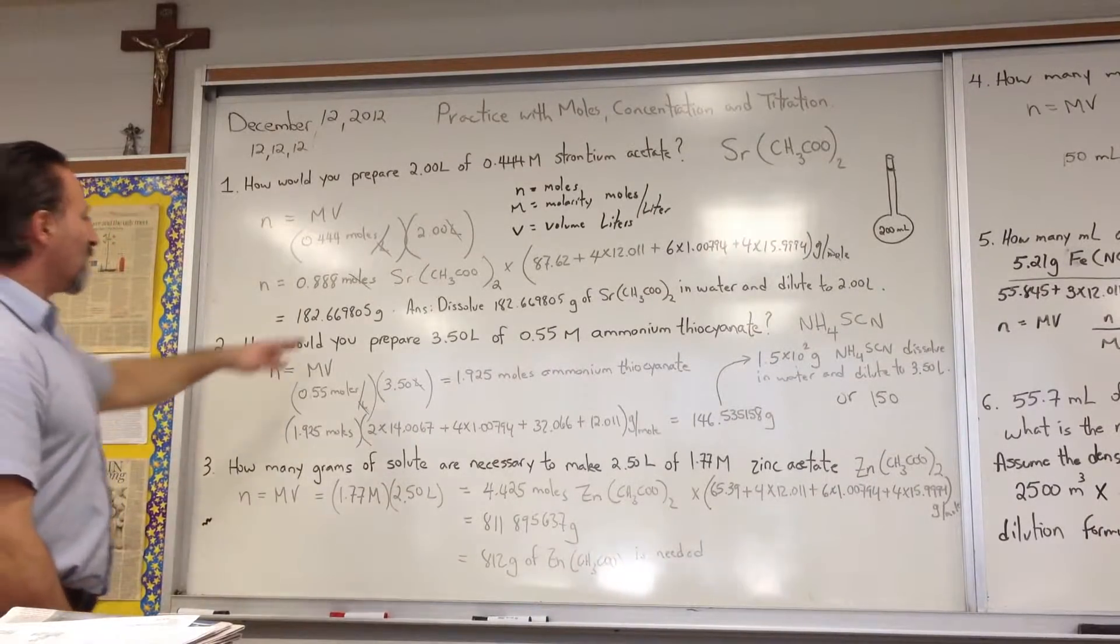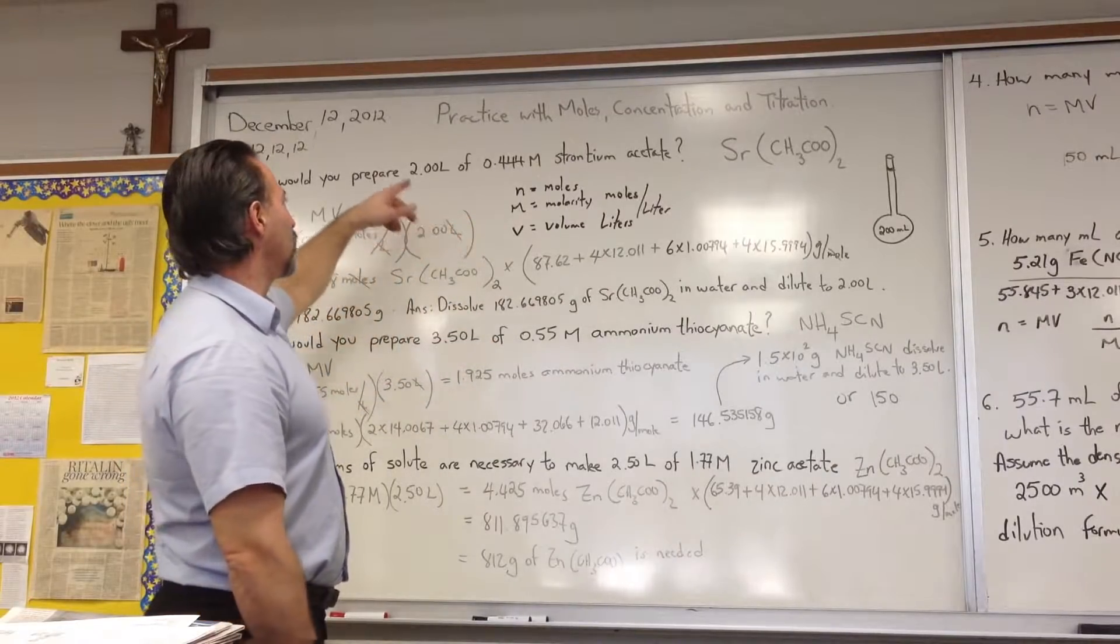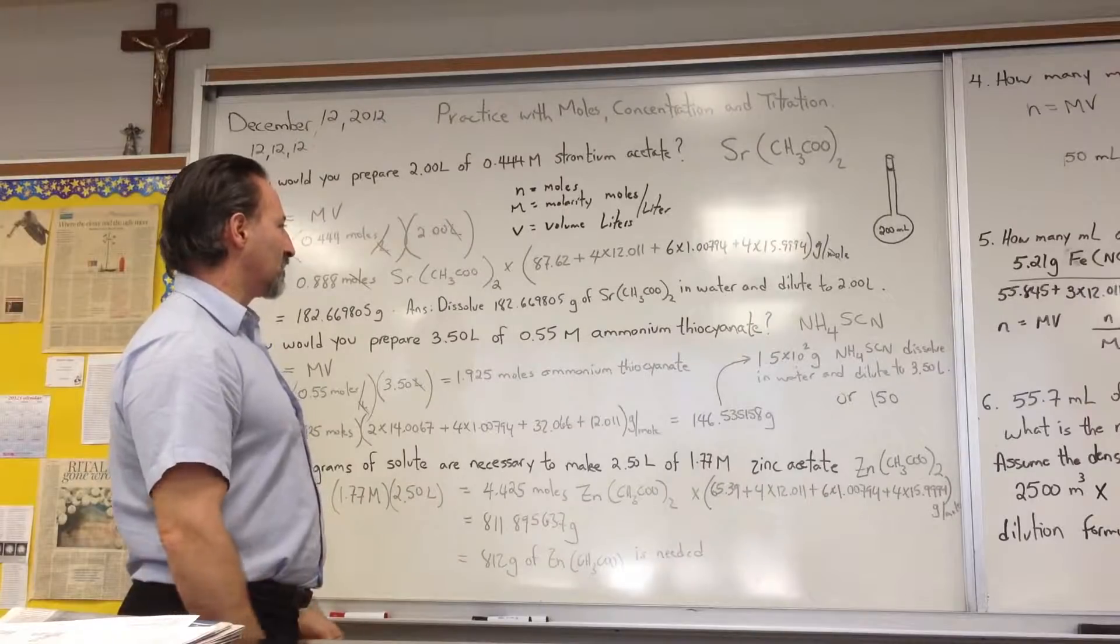It gives you 182.669805 grams of strontium acetate. Now, you want to dissolve this amount and then dilute the solution to two liters in a volumetric glass or suitable vessel.